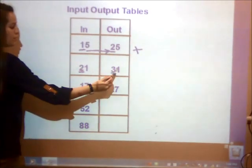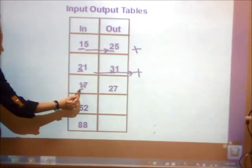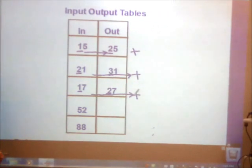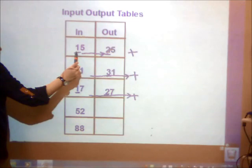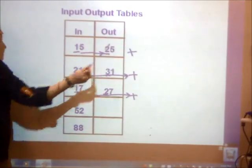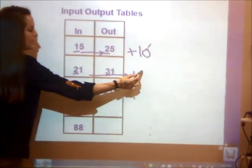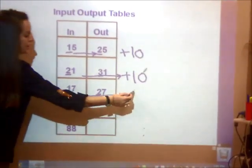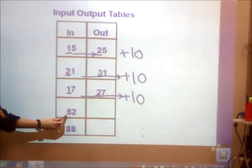Let's use our background knowledge of place values here. 21 to 31 is getting bigger. 17 to 27. If I think back to place values, I know that my tens place is increasing. 1 plus something to get 25 must be 10. 21 plus 10 gives me 31. 17 plus 10 gives me 27. Here's my pattern. Adding 10.